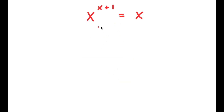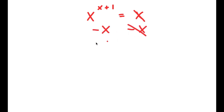In this problem, I have x to the power of x plus 1 is equal to x. To solve this, I'm going to start by subtracting x on both sides. These two cancel out and I'm left with x to the power of x plus 1 minus x is equal to 0.